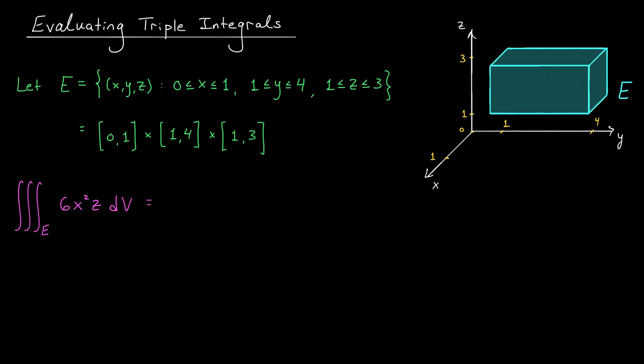So our outermost integral, which is going to be written with respect to x, has bounds 0 and 1. Then the next integral, which is with respect to y, has bounds 1 and 4. And finally, the integral with respect to z on the inside has bounds 1 and 3. Our function in this example is 6x²z, and we have our differentials dz dy dx.